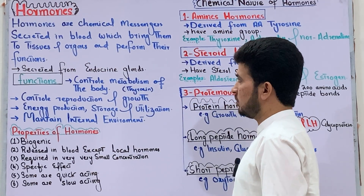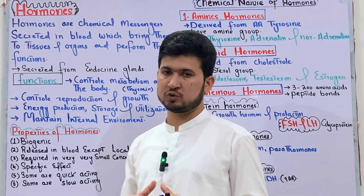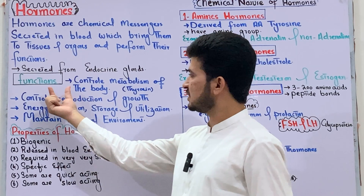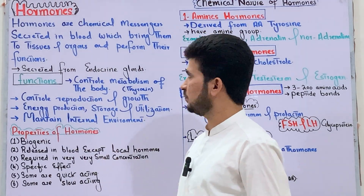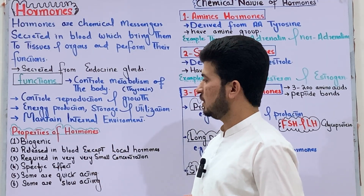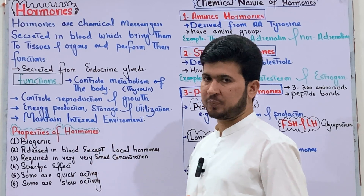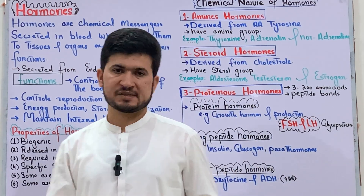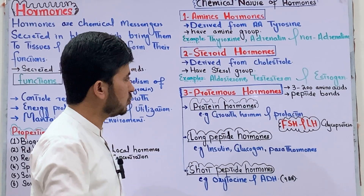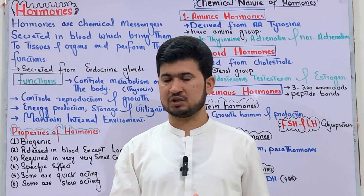In this chapter, we will first discuss the definition of hormones so you understand the concept. Then we will discuss the functions of hormones — what functions hormones perform in the human body — followed by the common properties of hormones, and finally the chemical nature of hormones in detail.